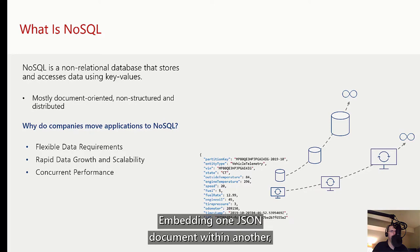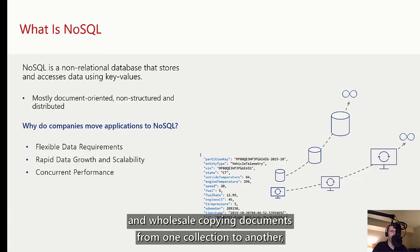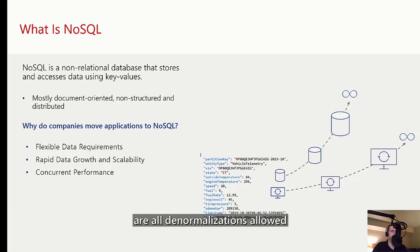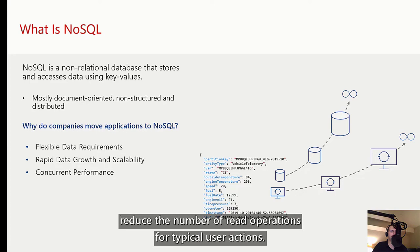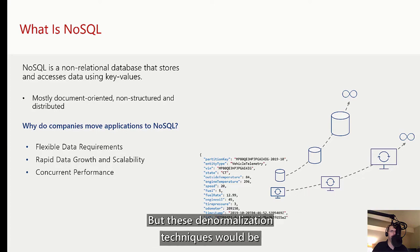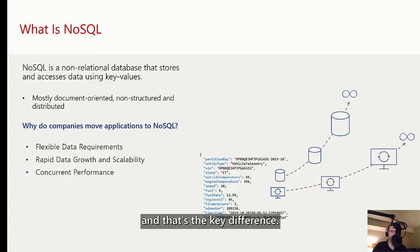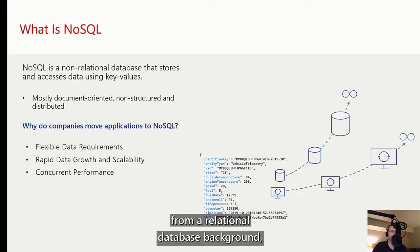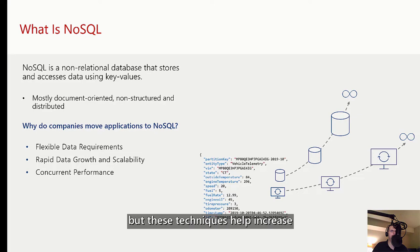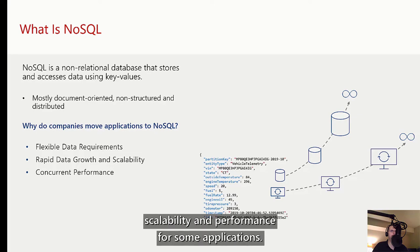Embedding one JSON document within another, putting unlike entities together in a container, and wholesale copying documents from one collection to another are all denormalizations allowed within non-relational databases that increase data locality and reduce the number of read operations for typical user actions. These denormalization techniques would be forbidden on a relational database platform — and that's the key difference. These techniques help increase scalability and performance for some applications.